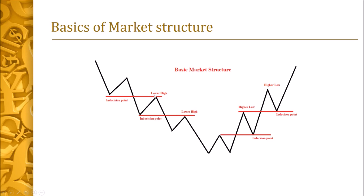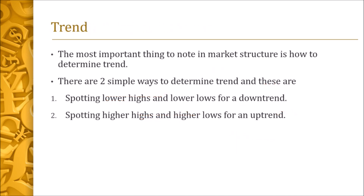To fully understand market structure, take this principle: whenever you break a key indecision point, we anticipate the retest and continuation of that trend. The most important thing to note in market structure is how to determine the trend. There are two simple ways — spotting lower highs and lower lows for a downtrend, and spotting higher highs and higher lows for an uptrend.